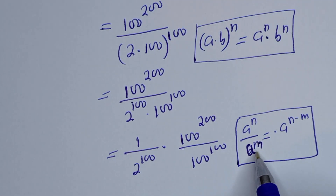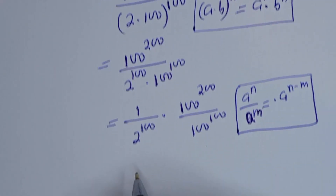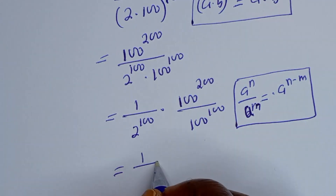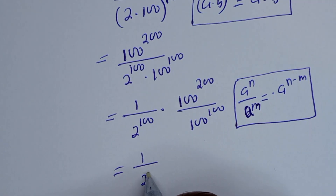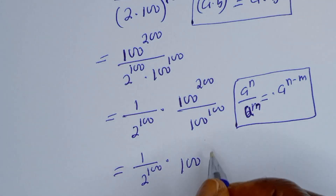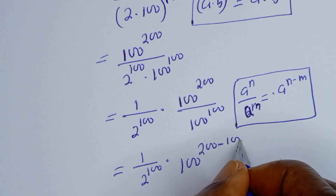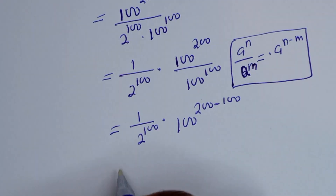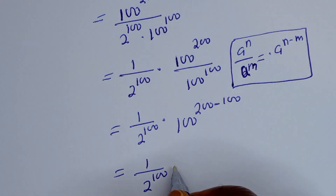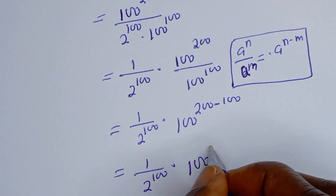Now, if you have a to the power of n divided by a to the power of m, this is equal to a to the power of n minus m. Then we have 1 over 2 to the power of 100, multiplied by 100 to the power of 200 minus 100, which gives 1 over 2 to the power of 100, multiplied by 100 to the power of 100.